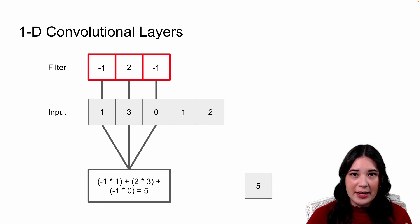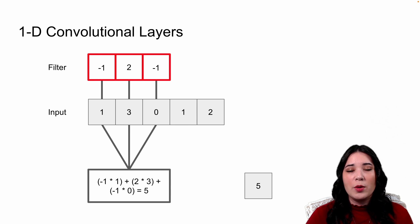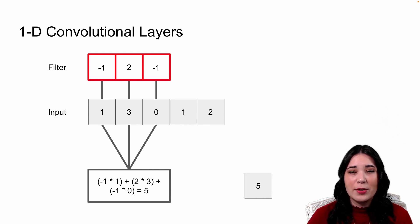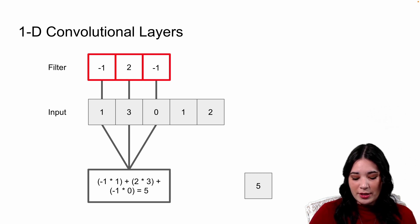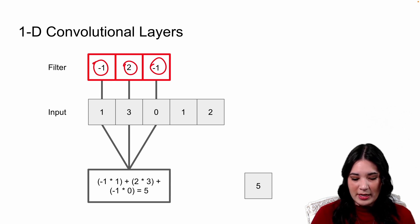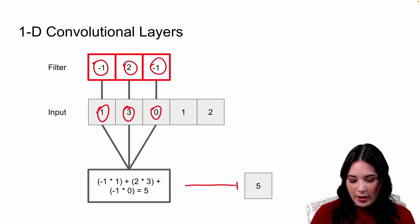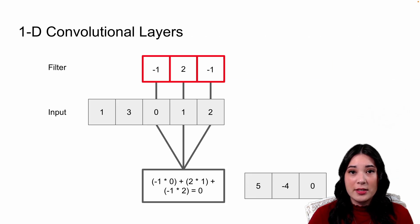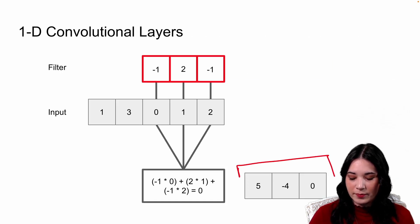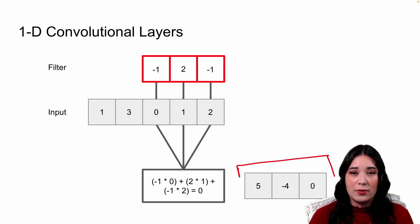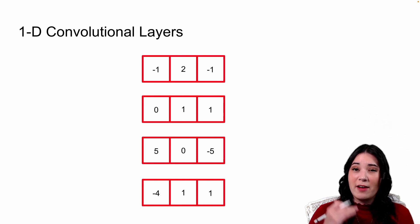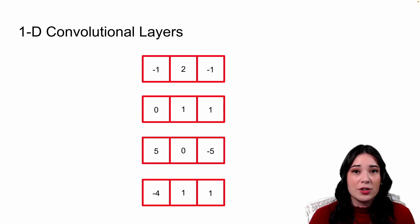Just like before, we take those filters, slide them across our data, multiply the filter values by the input values, and get our output. For example, here we have the filter negative one, two, negative one. The first time we put this filter on our input data, we multiply it by those three numbers, resulting in the output of 5. We repeat this process until we get to the end of the sequence. Because our filters are looking at chunks of the sequence together, we're not throwing away sequential information like we were with a feedforward network. We often have multiple filters to detect different features about our sequence.